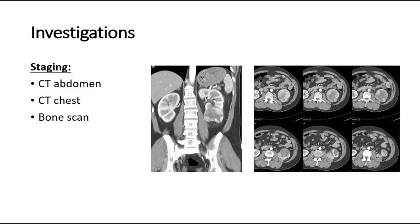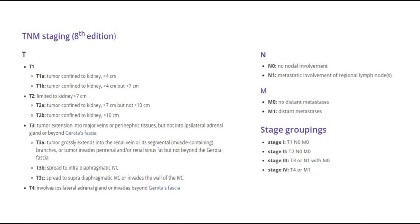This is the TNM staging for renal cell carcinoma. For T staging, there are four stages. T1 is divided into T1a — tumor confined to the kidney, less than 4 cm — and T1b — larger than 4 cm but less than 7 cm. T2 applies when the tumor is more than 7 cm: T2a is 7 to 10 cm, T2b is more than 10 cm. T3 involves extension into the renal veins or perinephric tissues: T3a is perinephric extension, T3b extends into the inferior vena cava below the diaphragm, and T3c invades the inferior vena cava above the diaphragm or its wall. T4 is invasion beyond the Gerota's fascia.